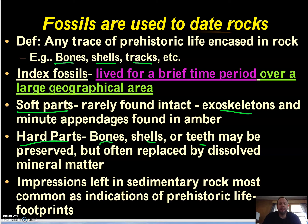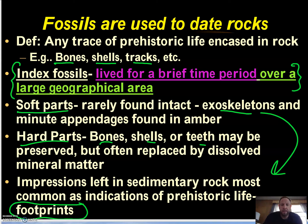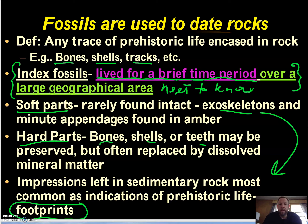Soft parts can also include things like impressions. Footprints are a big one — if it's a footprint or a movement print, we can determine that the animal lived then. Up here, there's something called an index fossil. Index fossils are fossils that lived for a brief period of time and over a large area.